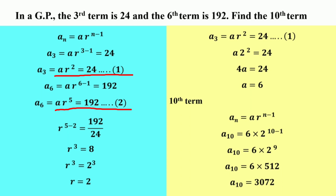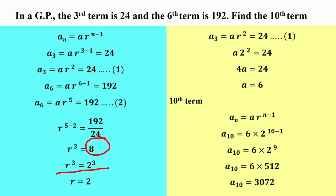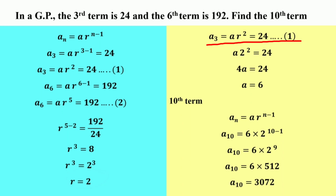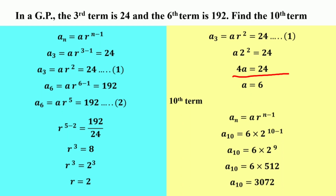Dividing equation 2 by equation 1 gives R^(5-2) equals 192 divided by 24, so R³ equals 8. We rewrite 8 in exponential form with base 2: R³ equals 2³. Equating the indices since they have the same base, R equals 2. Substituting R equals 2 into equation 1: A times 2² equals 24, so 4A equals 24, therefore A equals 24 divided by 4, which equals 6.